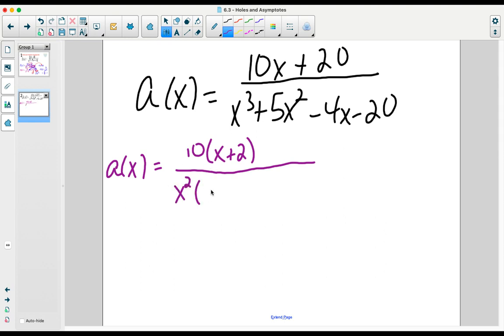So we take x squared out of the first group, leaving behind an x plus 5. And remember, when you look at your second group, you want to make sure that you match the inside of that binomial that was formed in the first group. So in order to get that to match, we're going to have to use minus 4 as our common factor, or negative 4.